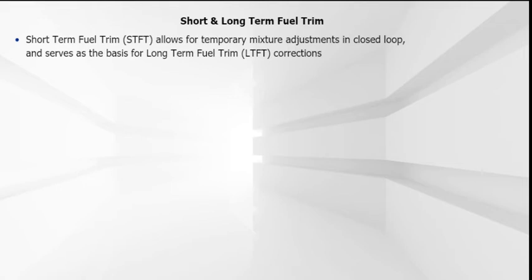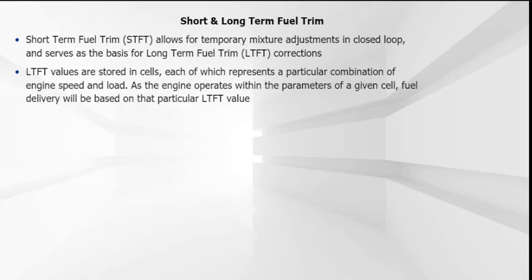For example, if the mixture is biased lean due to an air leak, STFT will compensate for the imbalance by adding fuel, or increasing injector pulse width. Fuel will continue to be added until the proper air-fuel ratio is restored, or STFT reaches the limit of its control. LTFT values are stored in cells, each of which represents a particular combination of engine speed and load. As the engine operates within the parameters of a given cell, fuel delivery, or injector pulse width, will be based on that particular LTFT value.